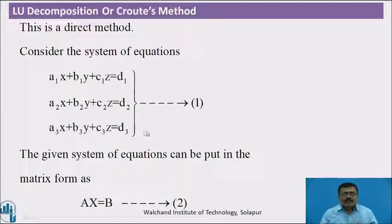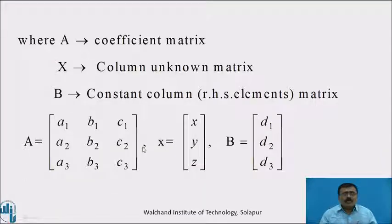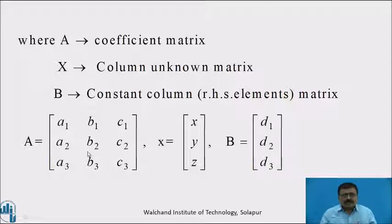Call it equation 1. The given system of equations can be put in matrix form as AX = B, where A is the coefficient matrix, X is the column unknown matrix, and B is the constant column matrix. That is, A = [[A1, B1, C1], [A2, B2, C2], [A3, B3, C3]], X = [X, Y, Z], and B = [D1, D2, D3].